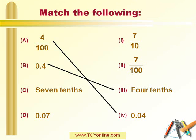After this we have 7 tenths. 7 tenths means 7 out of 10, or we can write this as 7 over 10. So C matches with 1. After this we have 0.07. 0.07 means 7 hundredths, which can also be written as 7 out of 100, which is 7 over 100. So D matches with 2.